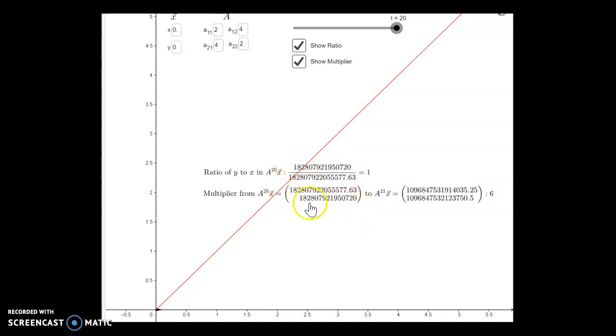But the ratio of the Y value to the X value is pretty much one. Which means that these two values are pretty much equal after 20 multiplications by A. And guess what? From A to the 20th, 20 multiplications by A to 21 multiplications by A. These, both of these numbers here, the X and the Y components have grown by a factor of six.